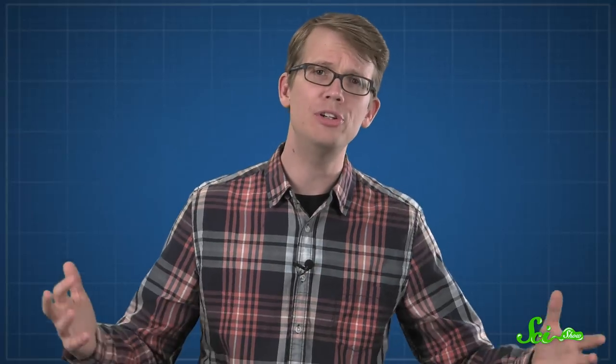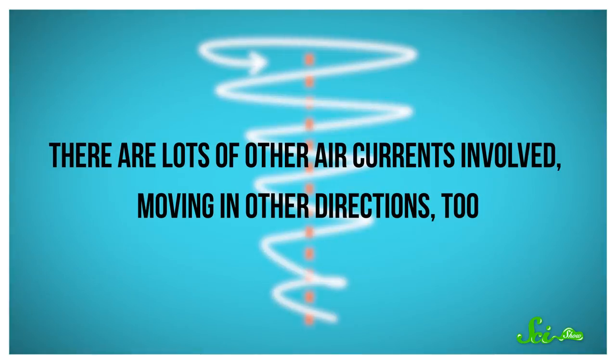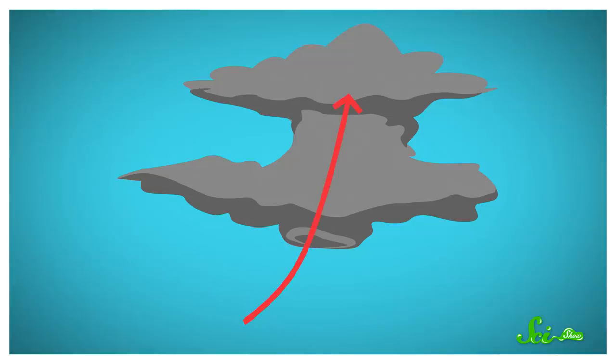When you think of tornadoes, you probably just imagine that one funnel spinning around a vertical axis. But there are lots of other air currents involved, moving in other directions, too. As a tornado forms, columns of warm, wet air quickly rise off the ground, dragging swirling winds along with them.